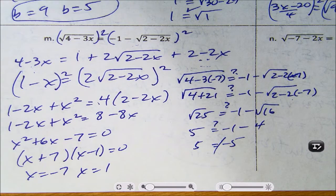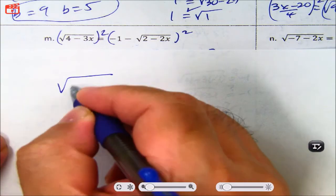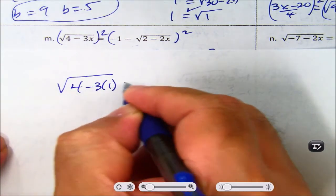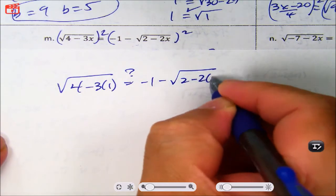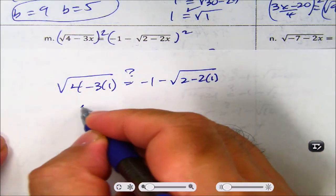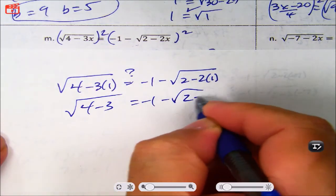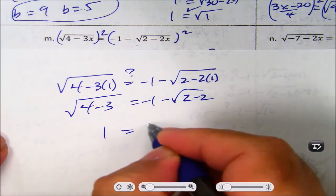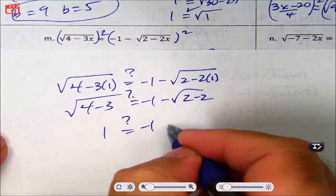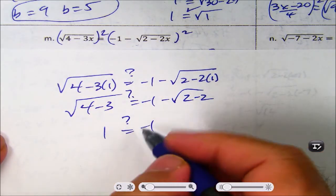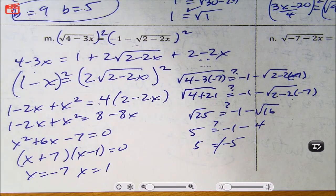Now checking x = 1: square root of 4 minus 3(1) = square root of 1 = 1. On the right: negative 1 minus square root of 2 minus 2(1) = negative 1 minus square root of 0 = negative 1 minus 0 = negative 1. So 1 is not equal to negative 1. Both solutions are rejected — this problem has no solution.